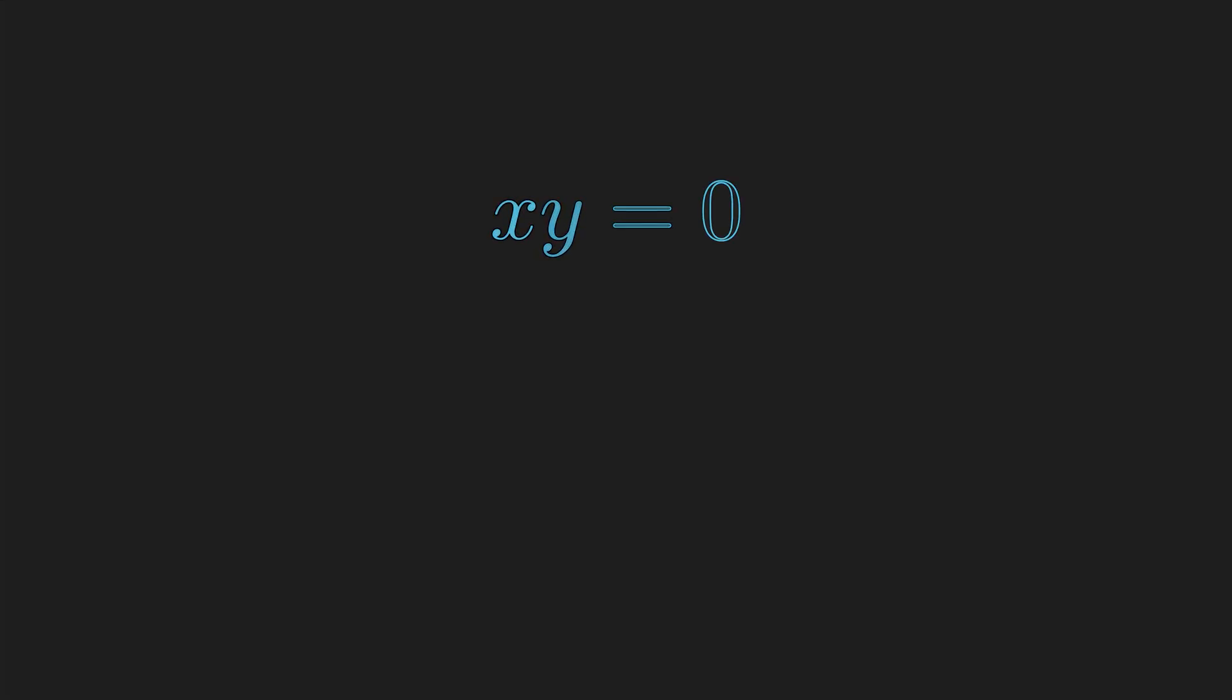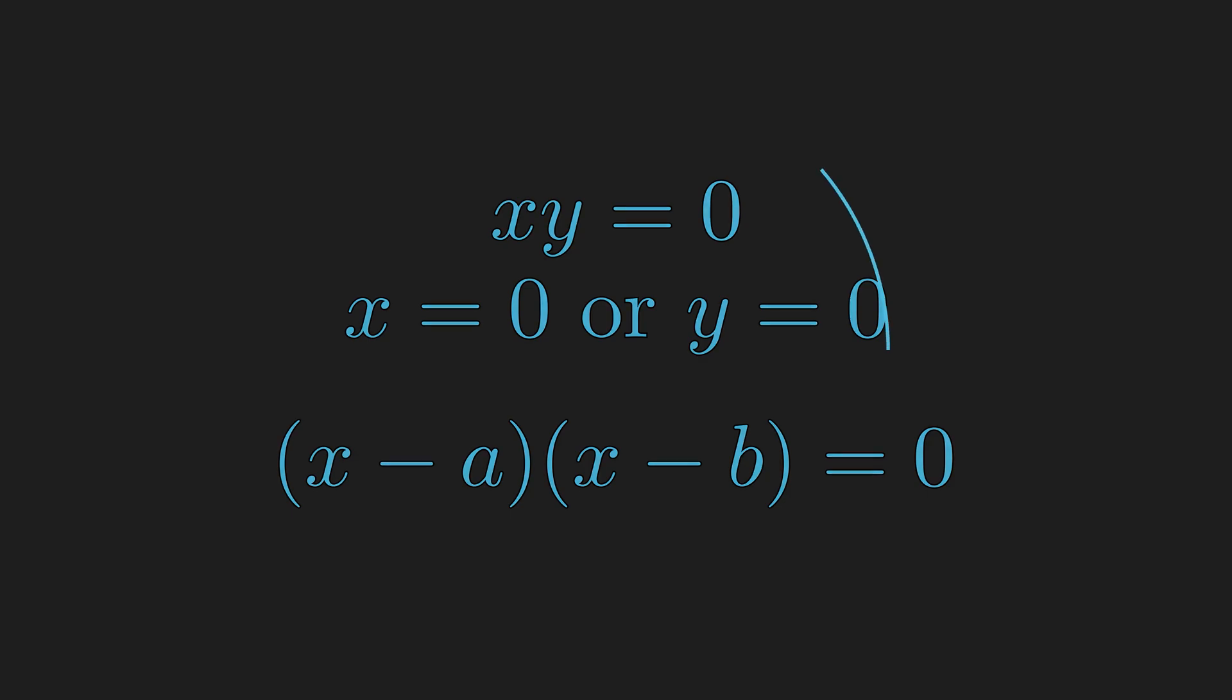In our very first algebra class, we learned about the zero product property, which states that if a product of two numbers is equal to zero, then at least one of the numbers has to be zero. This is very useful when solving equations that can be factored. However, in many number systems, the zero product property fails.